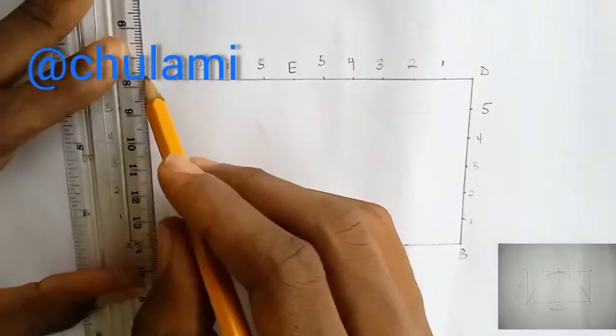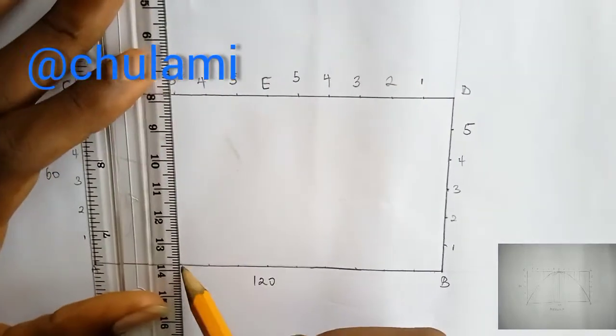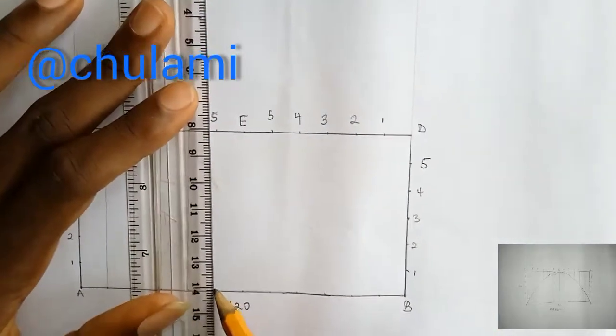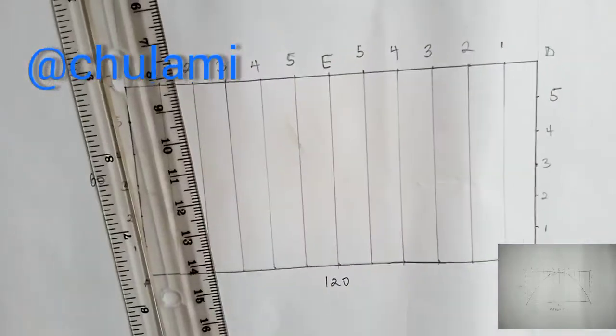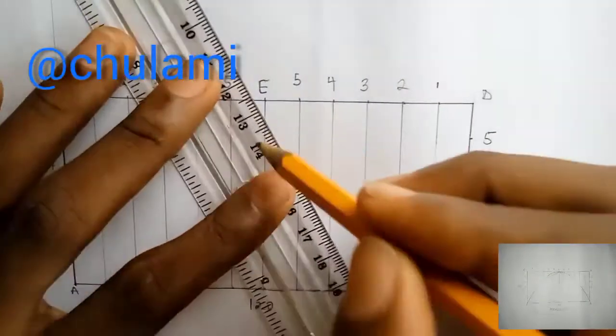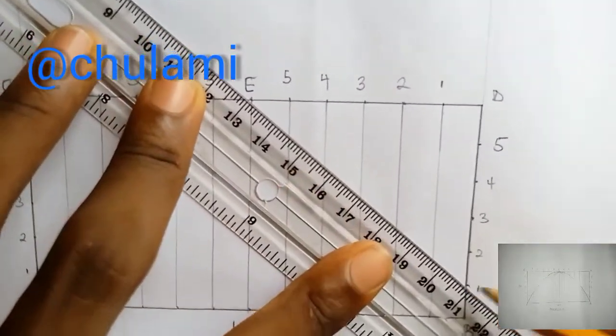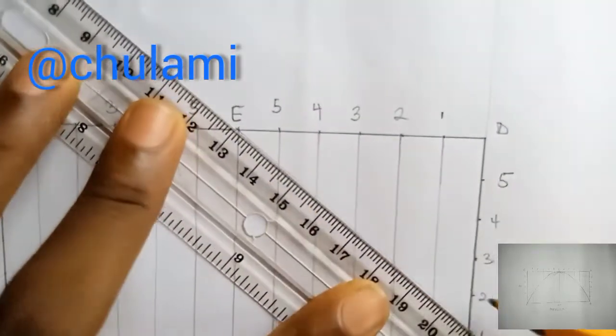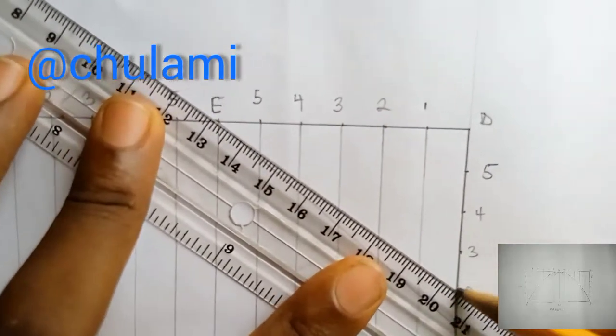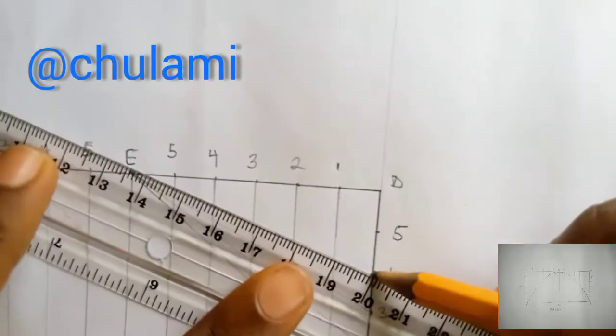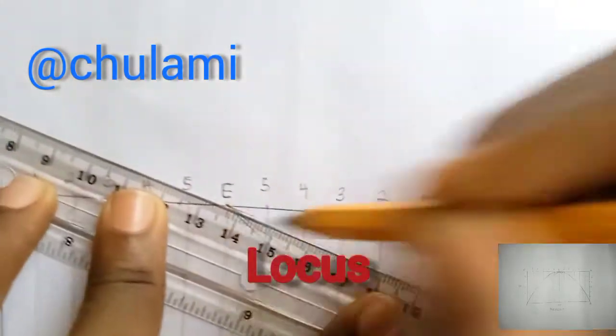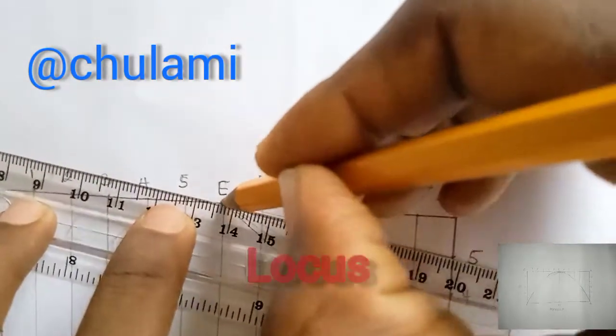Now we are joining one to the center point. Always ensure to make sure that your work is very, very neat. Because neatness is a credible point. I'm going to join from the middle point E, center E. I join point 1, 1 to E. And then 2 to E, 2 to E. Just keep joining all of them to the center line or the center point. 3 to E, 4 to E. And then lastly 5 to E.